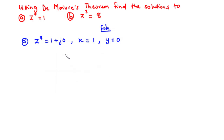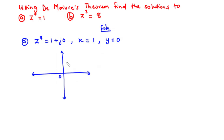Now let's represent this complex number on the Argand diagram where we find the values of r and theta. We have the imaginary axis and the real axis. The x value is 1 and the y value is 0, which means that the complex number 1 plus j0 is going to lie on the positive x-axis.